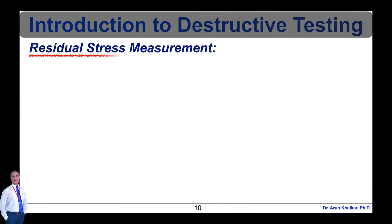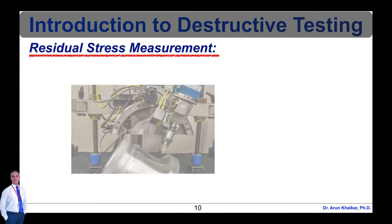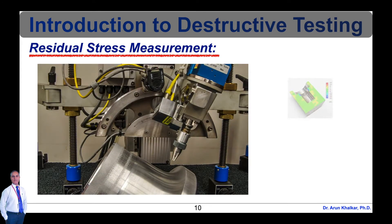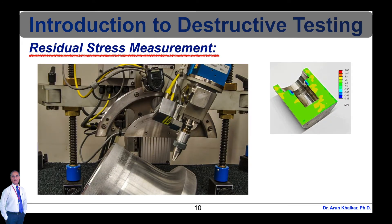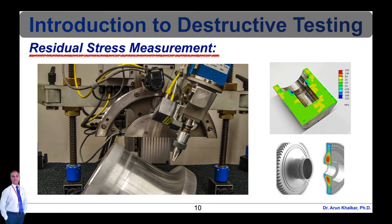Next is residual stress measurement. Residual stresses are those that remain in a solid material after the original causes of any stresses have been removed. This can be intentional, such as with the scratch-resistant glass on smartphones, or unintentional, which can lead to premature failure of a structure. Measurement of residual stresses allows designers and engineers to determine factors like near-surface and through-thickness residual stress distribution, which can be used in engineering critical assessments.